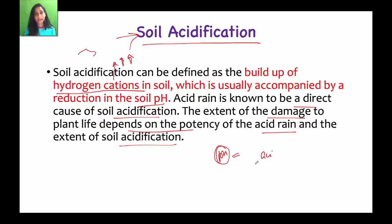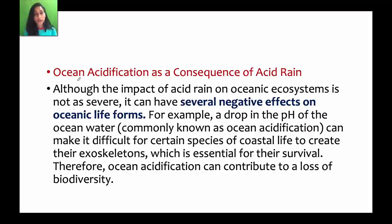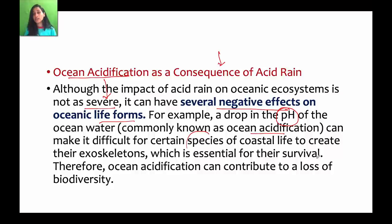Soil acidification and ocean acidification are both consequences of acid rain. Although the impact of acid rain on oceans is not as severe, there are negative effects. The pH drops in ocean water — commonly known as ocean acidification — and many marine species find it difficult to form exoskeletons. This is why we see biodiversity loss in the oceans.